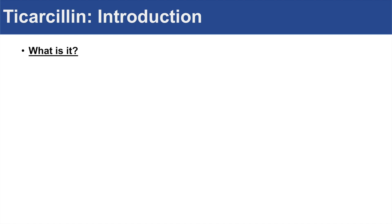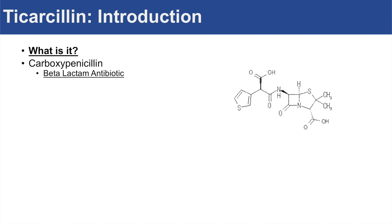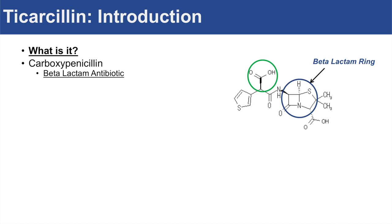So to begin, what is Ticarcillin? Well, it is a carboxypenicillin, and because it's a penicillin, it is a beta-lactam antibiotic. Here is an image of Ticarcillin, and this area of the molecule is actually the beta-lactam ring. Here's also another portion of the Ticarcillin molecule, and you can see here that it has a carboxyl group, and we'll talk about why this carboxyl group is important a little later on.